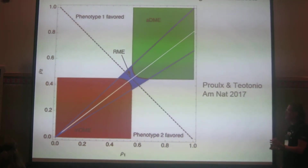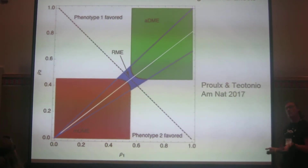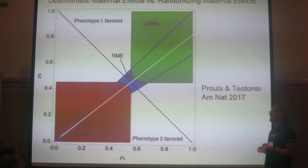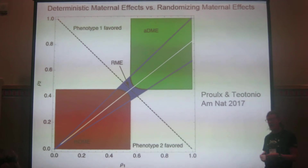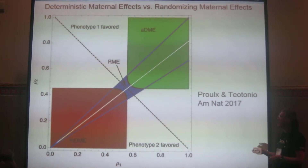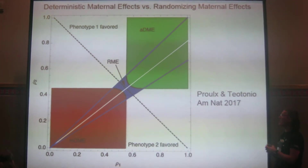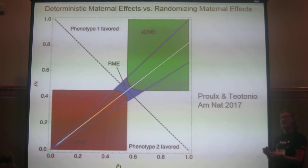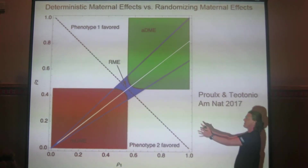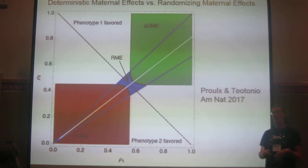What you get from this figure: if there's lots of information in the environment, use the information — probably obvious. If there's not much information, then bet hedging strategies can be favored. It also turns out that the area of the blue space depends on the absolute magnitude of the fitness effect. When the stakes are really high — when a mismatched offspring basically always dies — the blue region gets bigger, meaning the region that favors bet hedging expands.